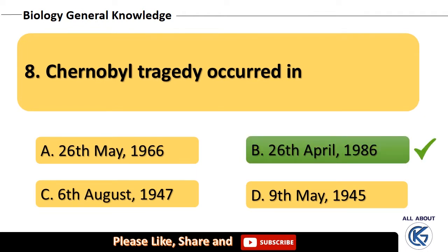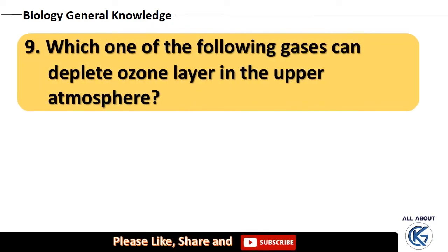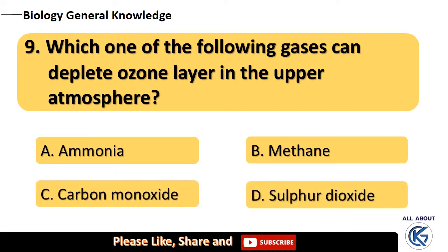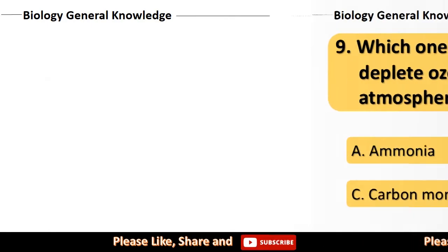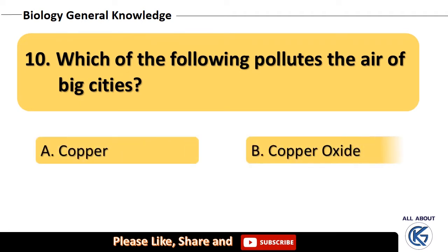Which one of the following gases can deplete the ozone layer in the upper atmosphere — ammonia, methane, carbon monoxide, or sulfur dioxide? The right answer is methane.